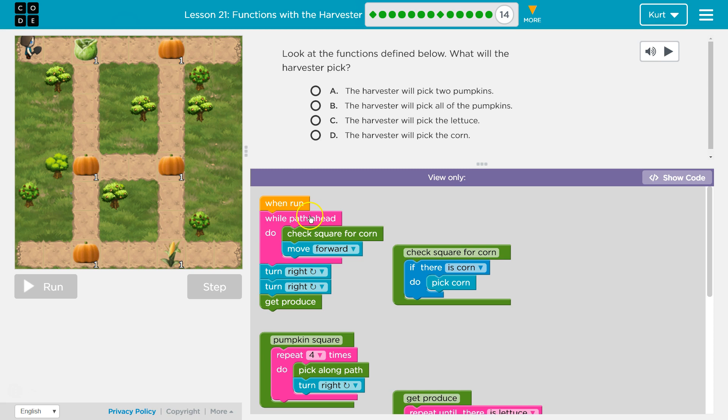So I go back to the top. While path ahead, yes, there's still path ahead. Pick, check for corn. I run this again and move forward. So I'm going to keep moving forward till here and then no, there's no path ahead. That is now false. So if there's no path ahead, what do I do? I would turn right, which would be this way. Oh wait, I'm facing this way. So turning right would be this way, and then I turn right again this way. And then I get produce.